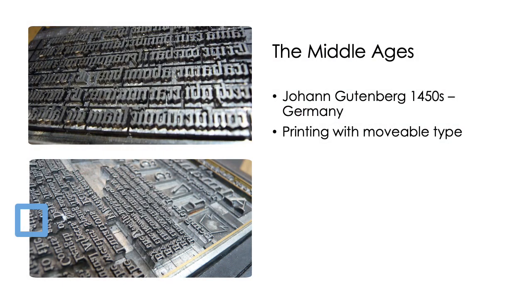One of the most significant things to happen in the Middle Ages was the invention of the printing press. The printing press was a system developed by somebody called Johann Gutenberg in Germany in the 1400s, and it involved printing with movable type.